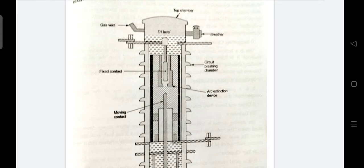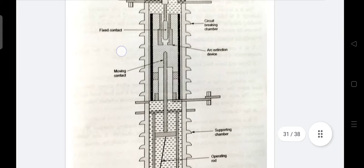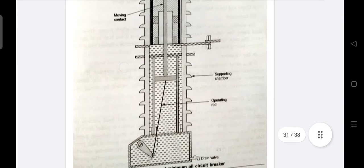A low or minimum oil circuit breaker uses a small container having oil which is just enough for arc extinction. The container of oil is supported on porcelain insulator so that required insulation can be obtained for live parts from earth. Thus low oil circuit breaker has added advantage that it requires less space than the bulk oil.